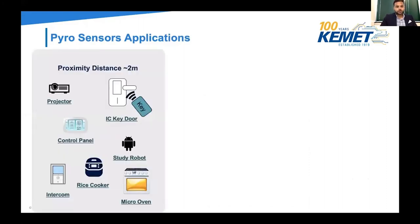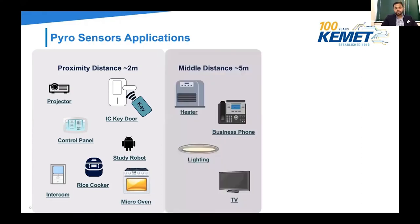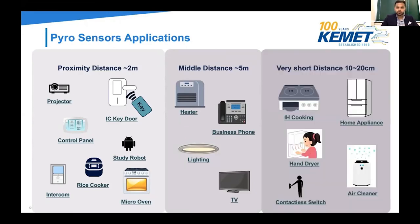Let's talk about some applications of our pyro sensor. At the two-meter proximity distance, one interesting application is IC key doors. When you're staying at a hotel, think about how many times you walk in and out of your room — the key door module is powered on continuously waiting for the one or two times you approach the door. If our pyro sensor was implemented, it can be turned off at all times and will only turn on when it detects someone within two meters. The mid-distance sensor can be found in conference room lightings, TVs, and business phones. The short-distance sensor is found in hand dryers in bathrooms, home appliances, and contactless switches.